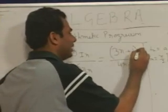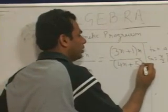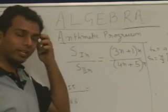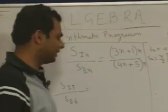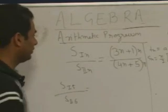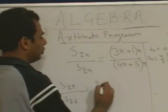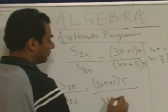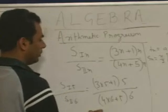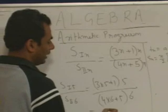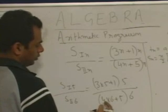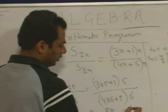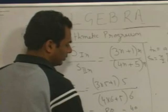Multiply the numerator by n and the denominator by n to make it quadratic. Now we can find out the answer directly. The sum of first 5 terms to first 6 terms: 3 × 5 + 1 multiplied by 5 divided by 4 × 6 + 5 multiplied by 6, which gives 80 divided by 29 × 6 = 80/174 = 40/87. So this is the answer.